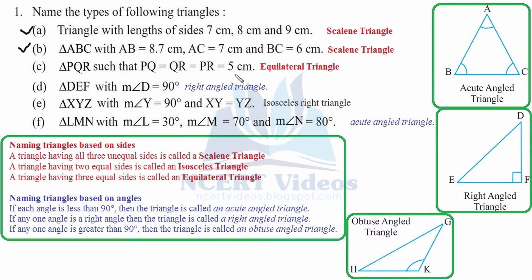Part c: Triangle PQR such that PQ, QR, and PR are all 5 centimeter. Therefore all the sides are equal. A triangle having three equal sides is called an equilateral triangle. Therefore it is an equilateral triangle.